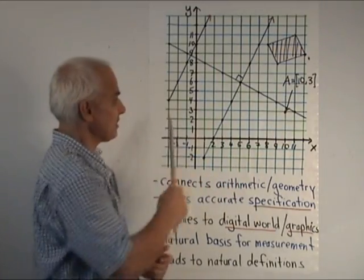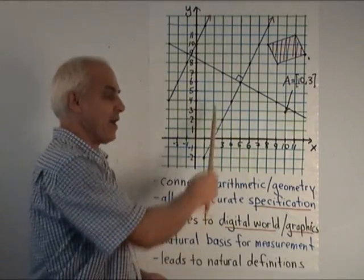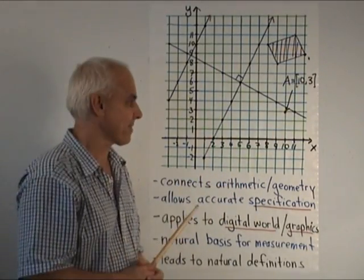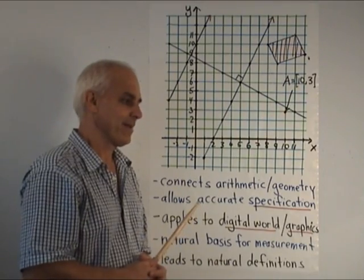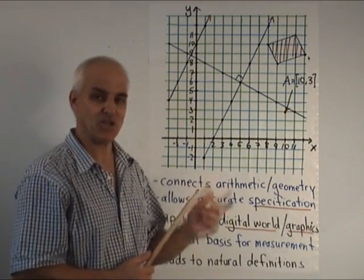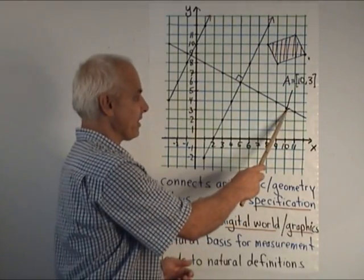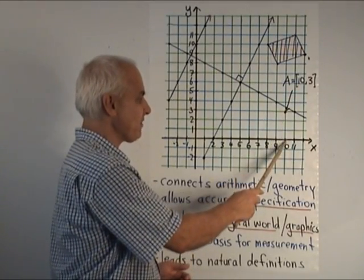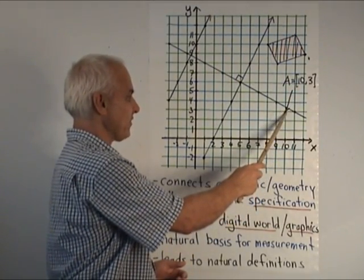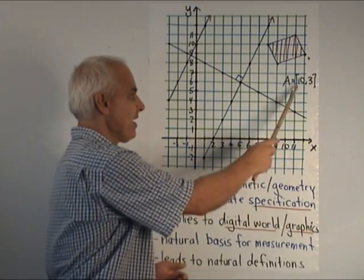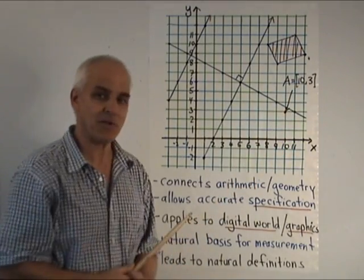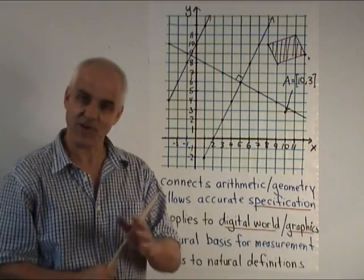So here's a piece of graph paper. Lines horizontal and vertical. And on it, we can illustrate many geometrical concepts. For example, a point can now be specified by its coordinates, in this case for this point, 10, 3. And so we can end up defining points in terms of coordinates, which is something that we're going to do.